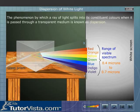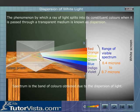The phenomenon by which a ray of light splits into its constituent colors when it's passed through a transparent medium is known as dispersion. Spectrum is the band of colors obtained due to the dispersion of light.